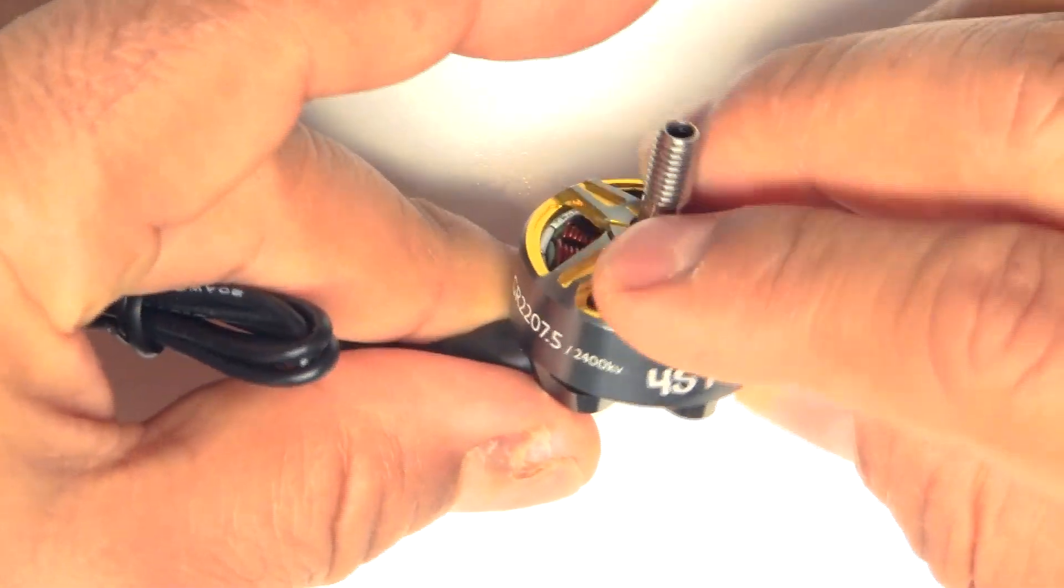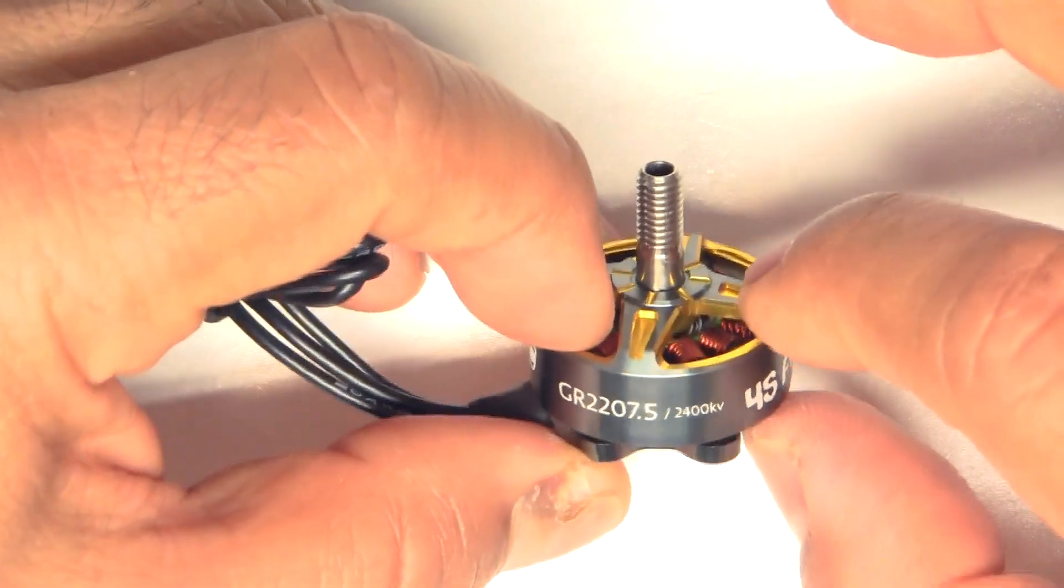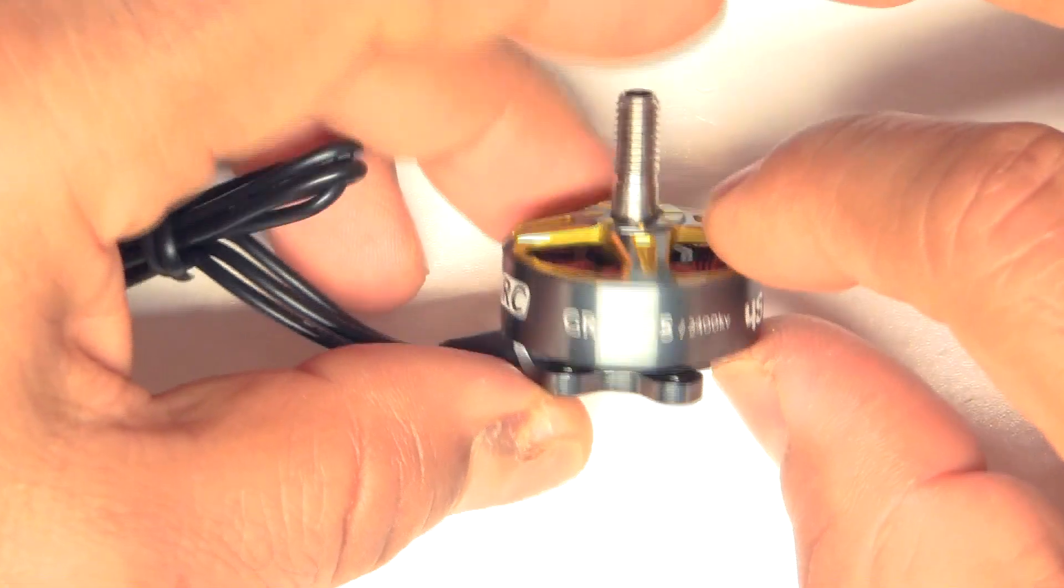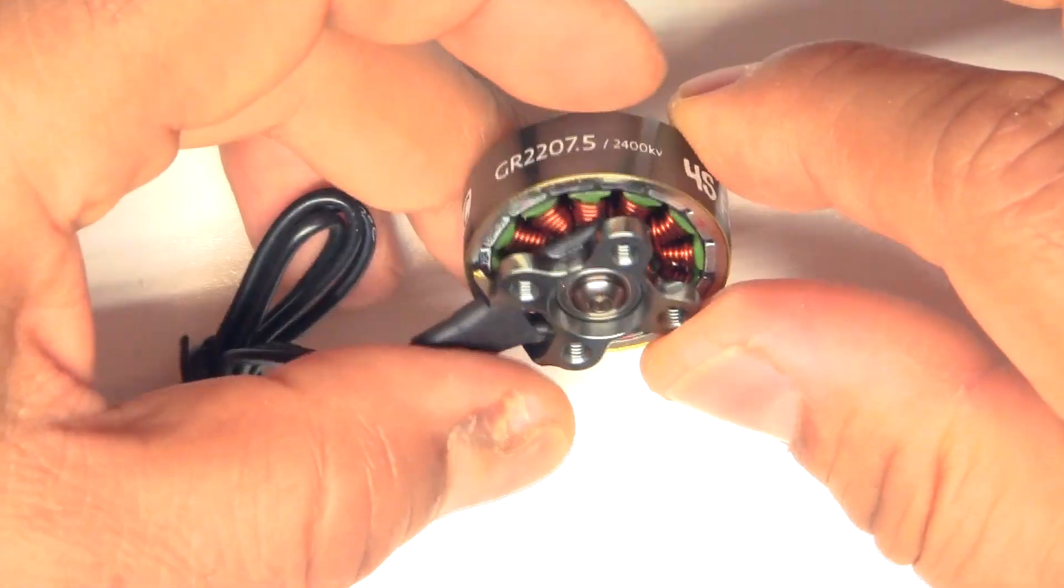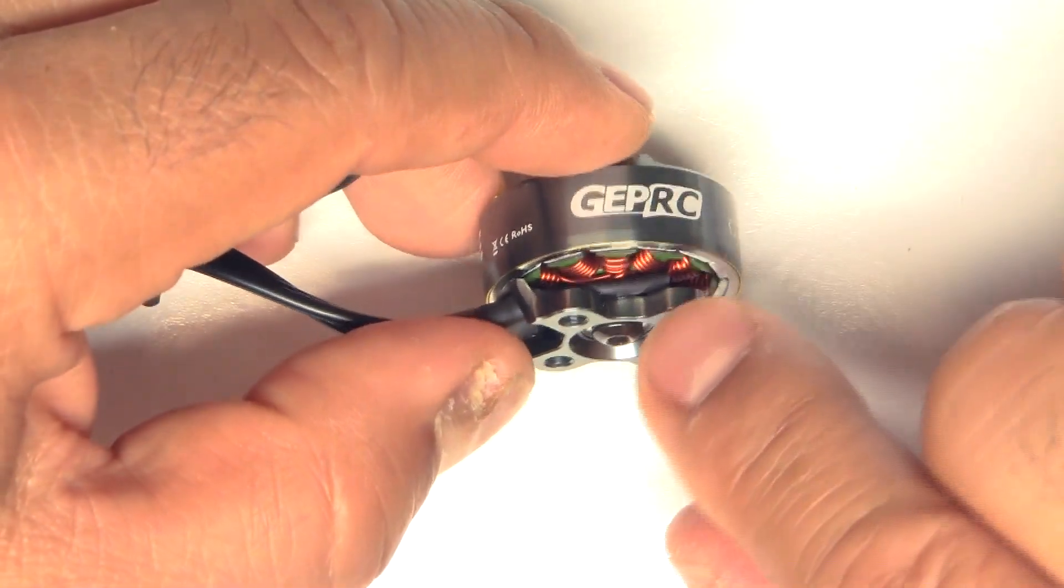So there it is, 4S freestyle. So 2207.5, that's been the trend lately. They're going to taller motors, looking for more power, more control. So this one comes in the usual configuration that we're used to seeing.